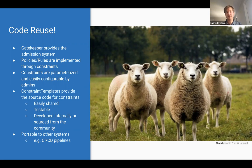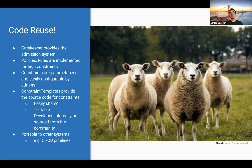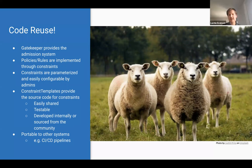On violations being kept in the custom resource status: currently violations are shown in the constraint status field, not as events on the violating resources. There is no native eventing system today. For alerting integrations like Slack, the current approach is to use Prometheus metrics with alert manager. Violations can also be viewed in logs. Feel free to raise an issue on GitHub to discuss eventing on the violating resource directly.